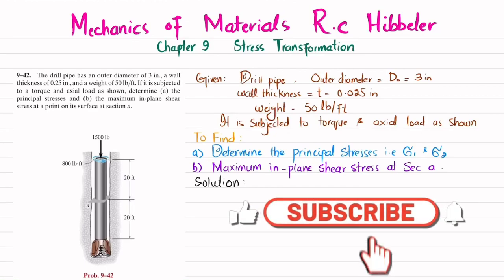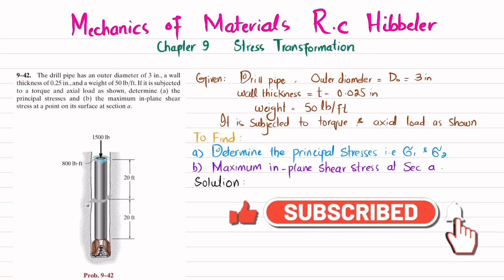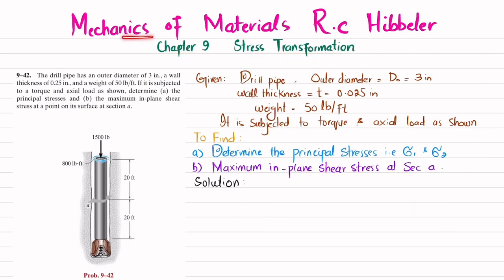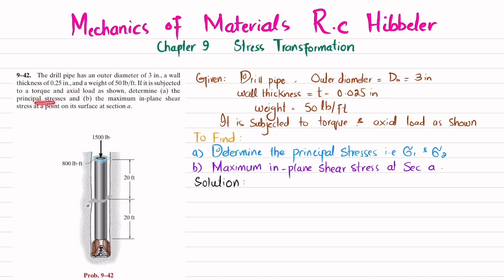Welcome back. Problem 9-42 is taken from Chapter 9 on stress transformation from the book Mechanics of Materials by R.C. Hibbeler. The problem states: the drill pipe has an outer diameter of 3 inches, a wall thickness of 0.25 inches, and a weight of 50 pounds per feet. It is subjected to torque and axial load. Determine the principal stresses and the maximum in-plane shear stress at a point on its surface at section AA.